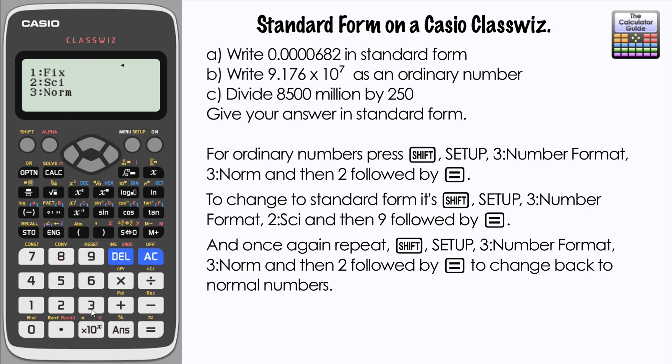And to change back to normal, that's shift, set up, number format, 3, and then norm 2, equals. And then it's just given it to us as a normal ordinary number again. So there we go, how we can change between standard form and ordinary numbers on the calculator.